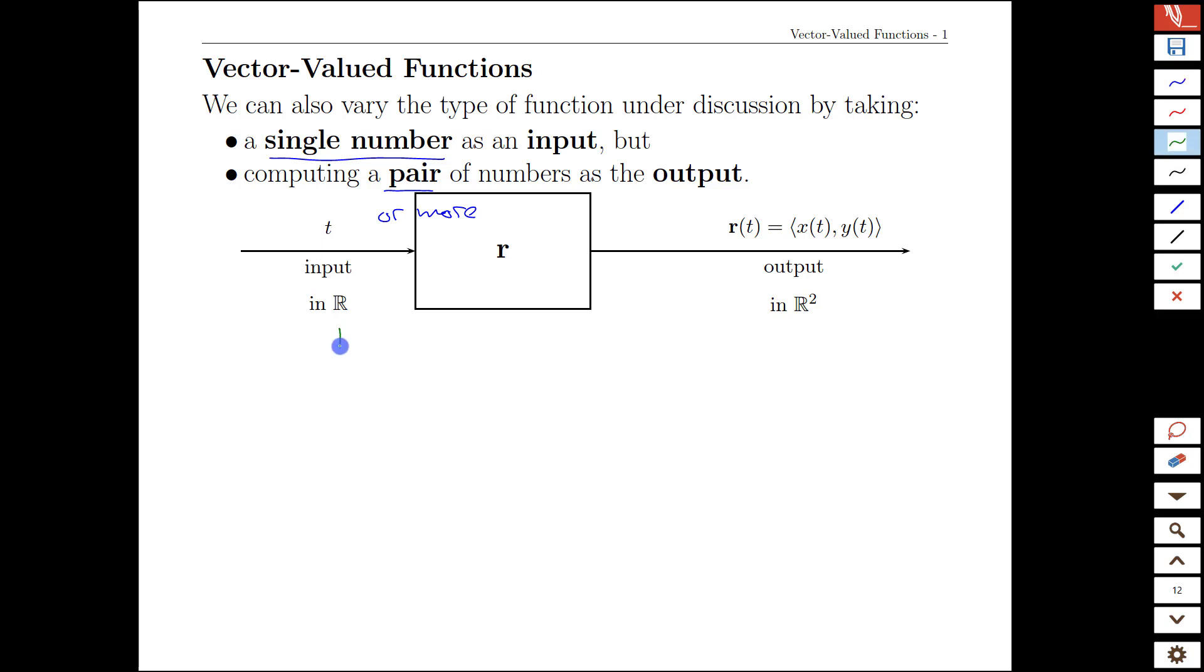Just a quick notation here: this fancy R here means all real numbers and it's pronounced just R. So we would say that t is an input in R, or R1, to contrast it with the output over here which is in R squared, but we would say this as R2.